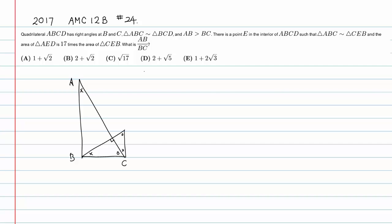Now there is a point E chosen in the interior of quadrilateral ABCD. When you choose point E here, certain areas become equal — same base, same height — so E cannot be just anywhere.